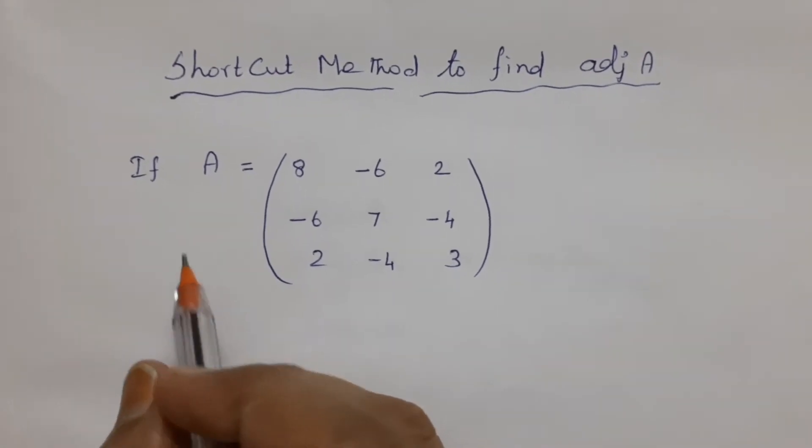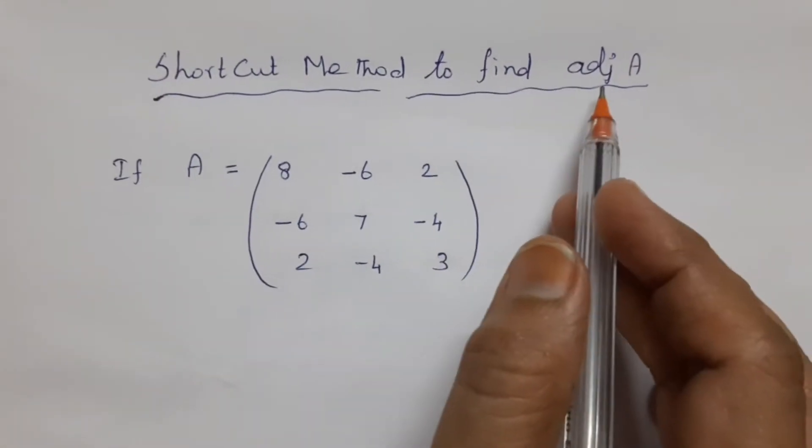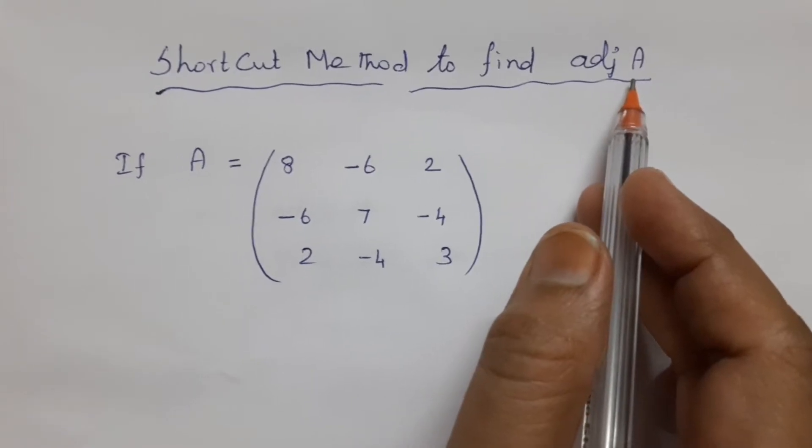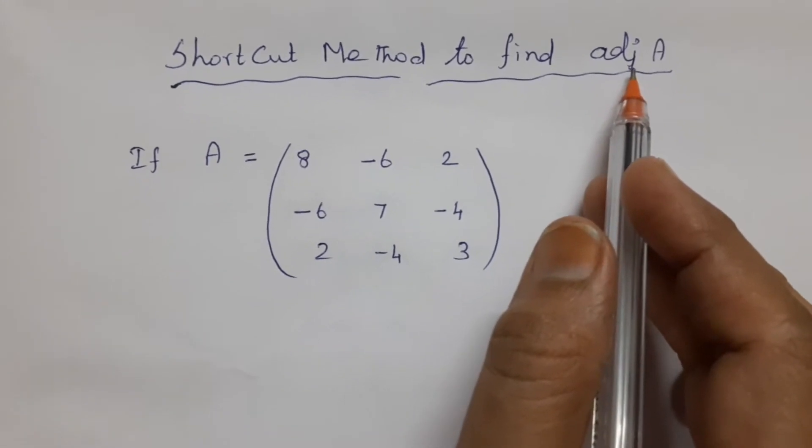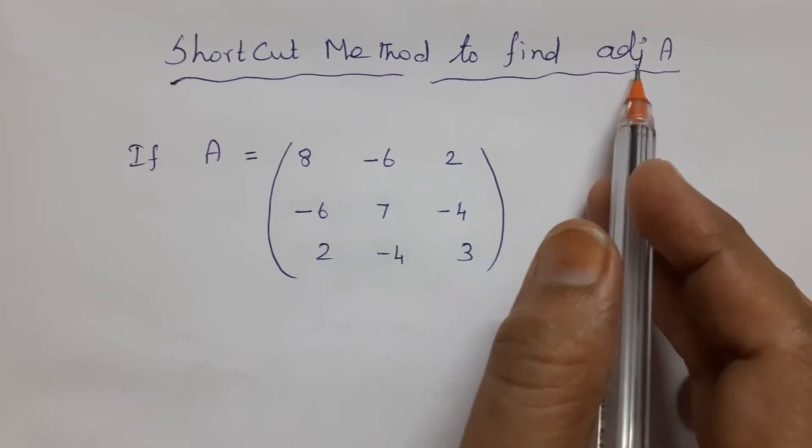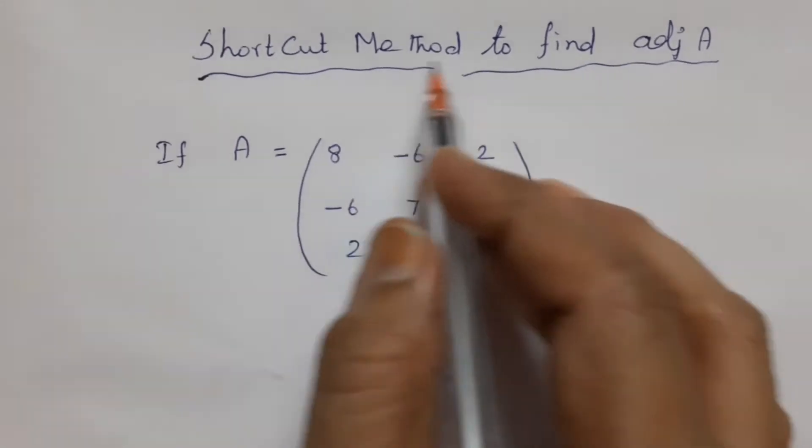Hi students, now let us see the shortcut method to find the adjoint of a given matrix. We already know that adjoint is the transpose of the cofactor matrix. Now we are going to see the shortcut method.